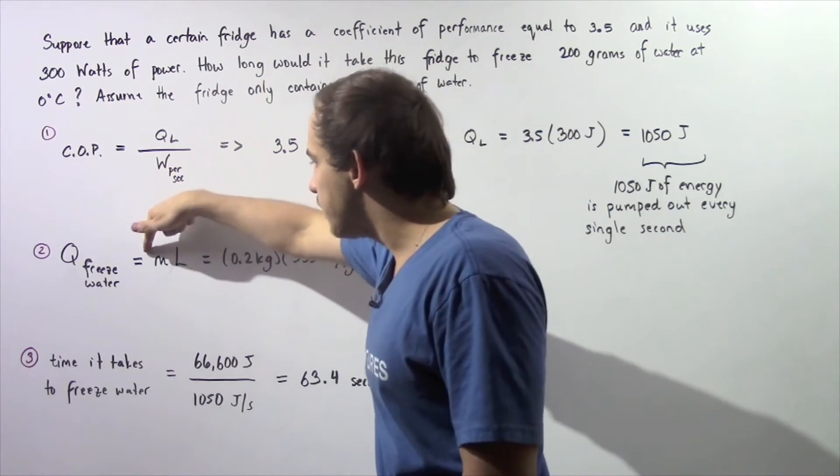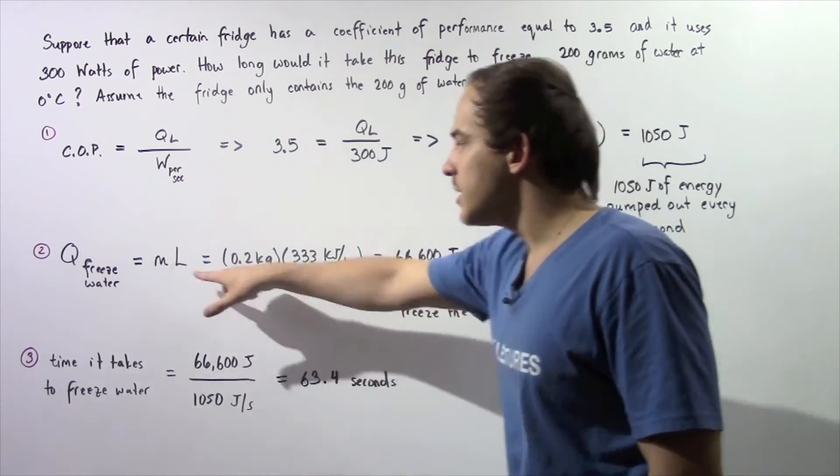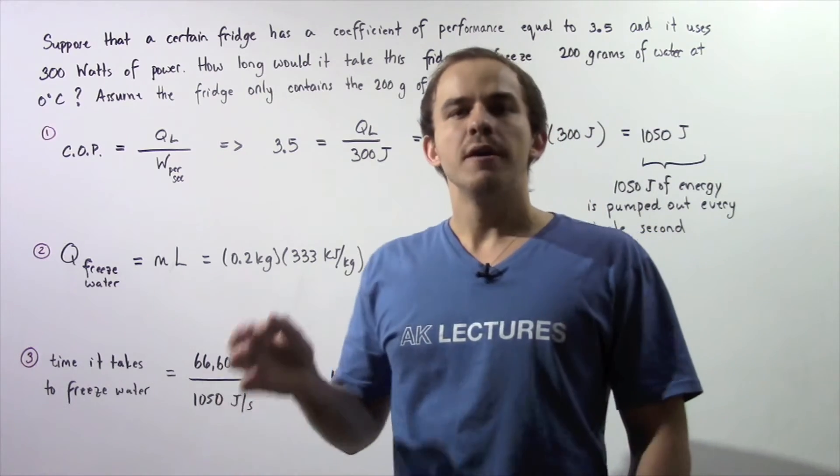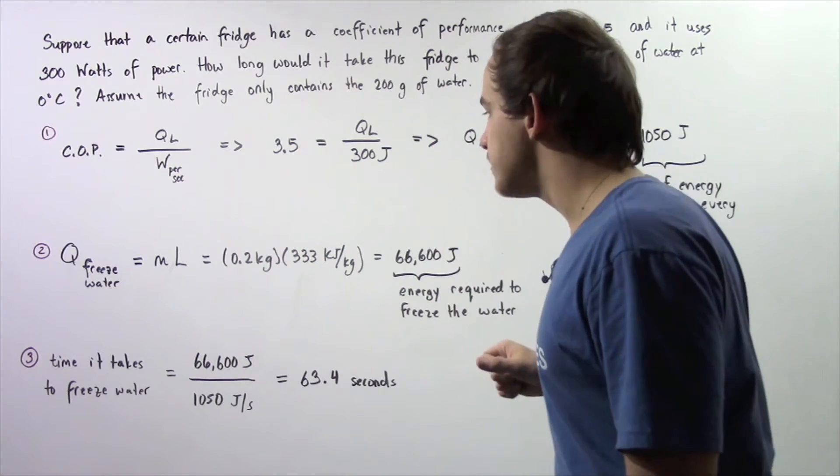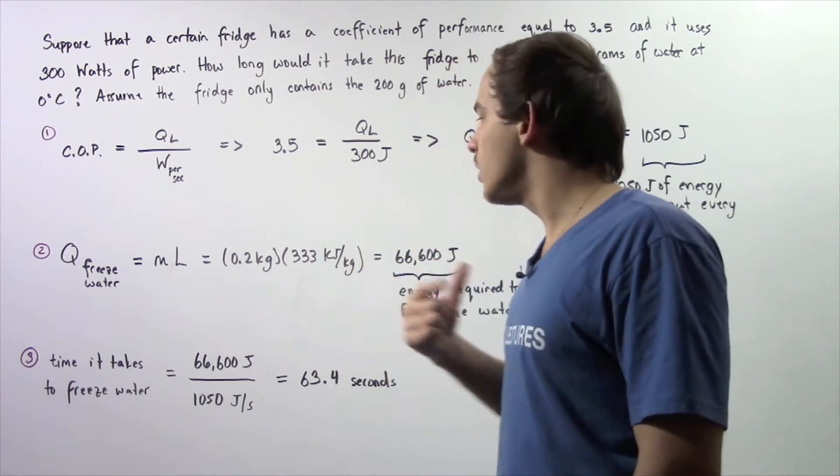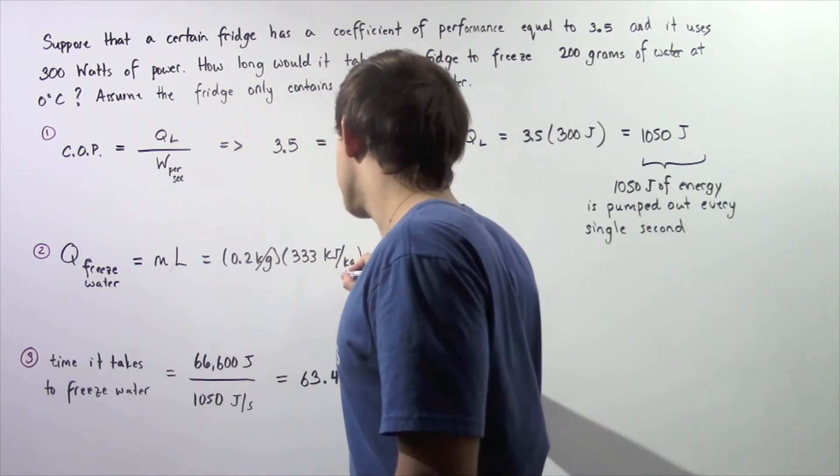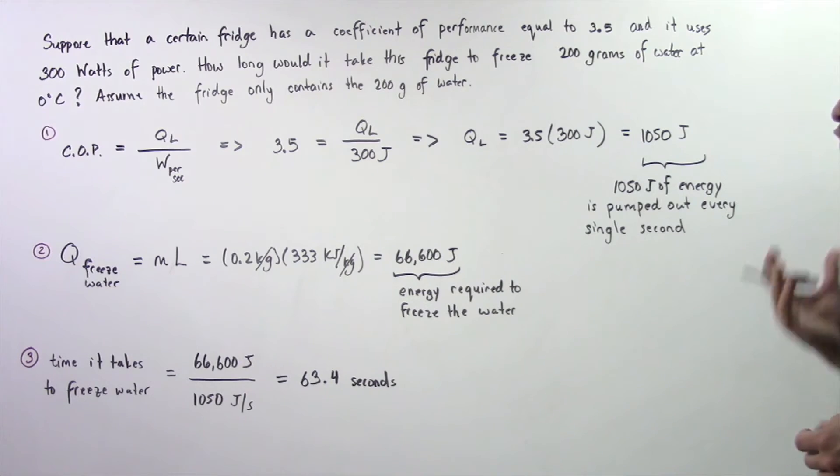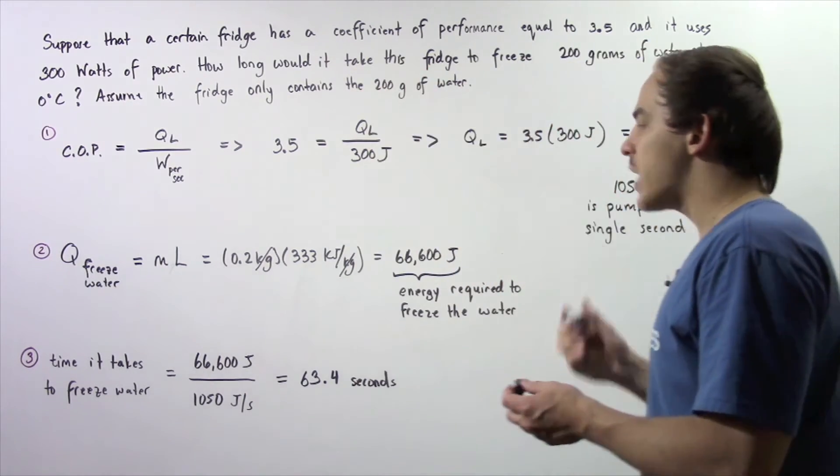And this quantity is given by taking the product of the mass and the heat of fusion. Now the heat of fusion for water is given to be 333 kilojoules per kilogram. So we multiply 0.2 kilograms because 200 grams is equivalent to 0.2 kilograms. We multiply that by 333 kilojoules per kilogram. Notice that our kilogram will cancel and we're left with 66,600 joules of energy is required to completely freeze 200 grams of water.